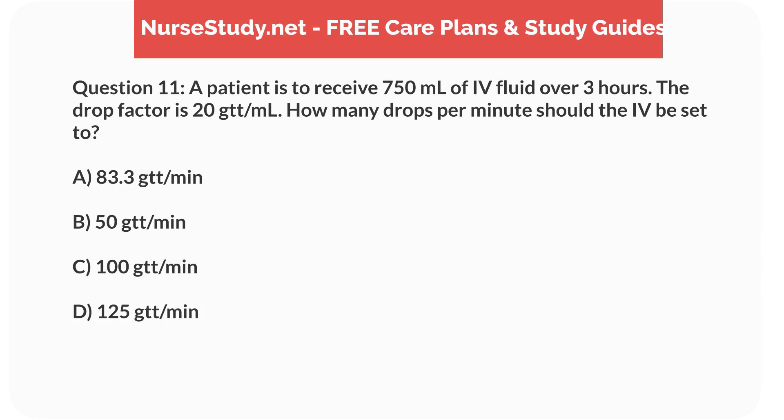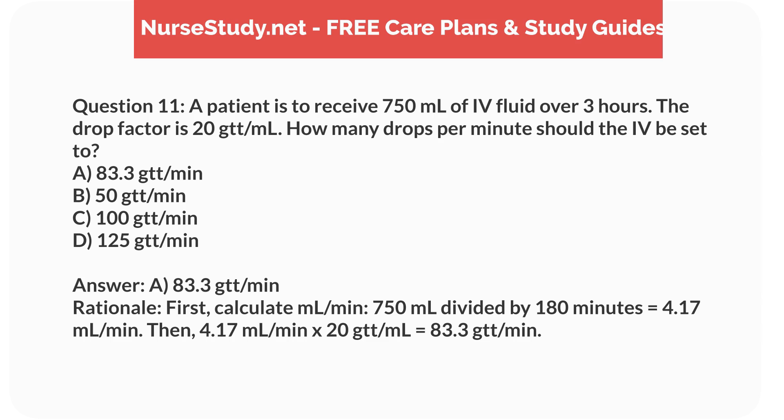Question 11. A patient is to receive 750mL of IV fluid over 3 hours. The drop factor is 20 drops per mL. How many drops per minute should the IV be set to? a. 83.3 drops per minute, b. 50 drops per minute, c. 100 drops per minute, d. 125 drops per minute. Answer: a. 83.3 drops per minute. Rationale: First, calculate mL per minute: 750mL divided by 180 minutes equals 4.17mL per minute. Then, 4.17mL per minute times 20 drops per mL equals 83.3 drops per minute.